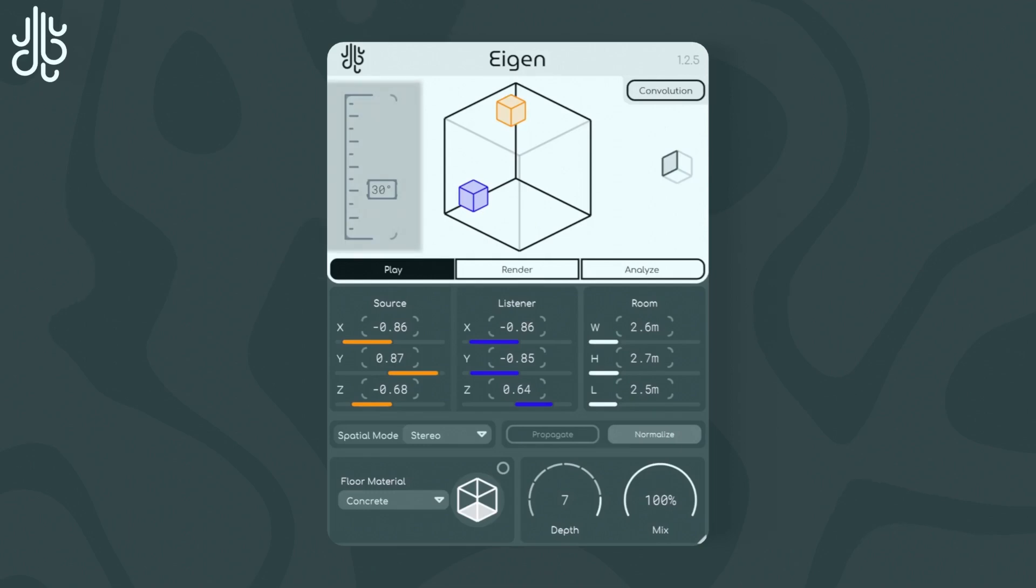The angle slider to the left of the positioner just controls the vertical viewing angle of the positioner, and it doesn't adjust the sound.